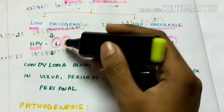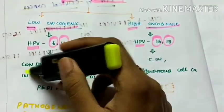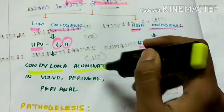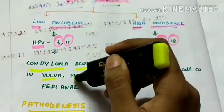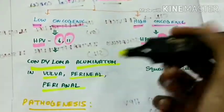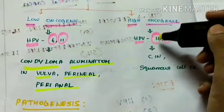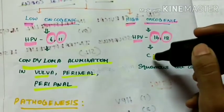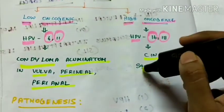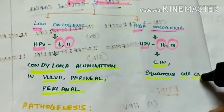The HPV 6 and 11 cause condyloma accumulatum in vulva, perineal and perianal regions. Whereas the HPV 16 and 18 causes CIN and squamous cell carcinoma.